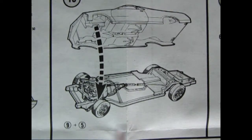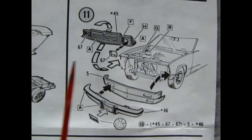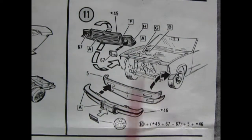Step 10 shows our body being dropped onto our chassis rails. Step 11 shows our headlights going into our grille assembly which then goes into the front of the car. We also add in this front splash pan, our bumper and our license plate.